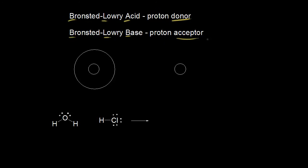Let's quickly review what a proton refers to. For a neutral hydrogen atom, the most common isotope has one proton in the nucleus and one electron outside the nucleus. If we take away the electron, we're left with just that proton — the nucleus of a hydrogen atom — which is equal to H+. So a proton donor is something donating an H+, and a proton acceptor is accepting that H+.